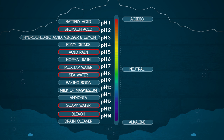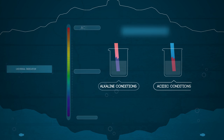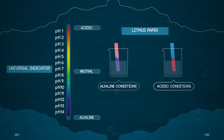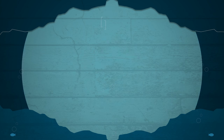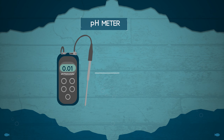Universal indicator is so called due to its ability to indicate the entire pH spectrum. There are other indicators that can be used with other colour changes, but these two are the ones you need to know. We can also get even more accurate measurements of pH using a pH meter, which will give us readings to 0.01 of the pH.